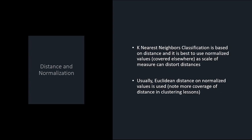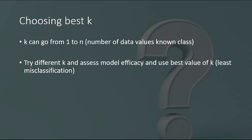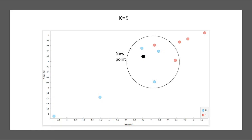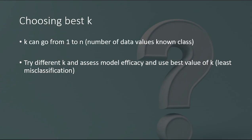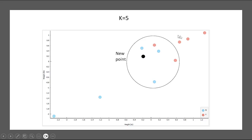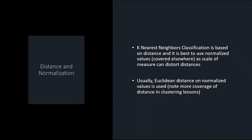K can technically range from one to n, where n is the number of data values. For example, if the dataset has 10 points you could technically do k equals 10, but that would just select the whole dataset and classify by overall majority, which wouldn't make sense. Three or five is typically the value used for neighbors. Note that even though a circle is drawn around the five nearest neighbors on the plot, this does not indicate a cluster — the circle just identifies the five nearest neighbors to the new point. We are not clustering these points; we are simply finding the majority class among the nearest neighbors.